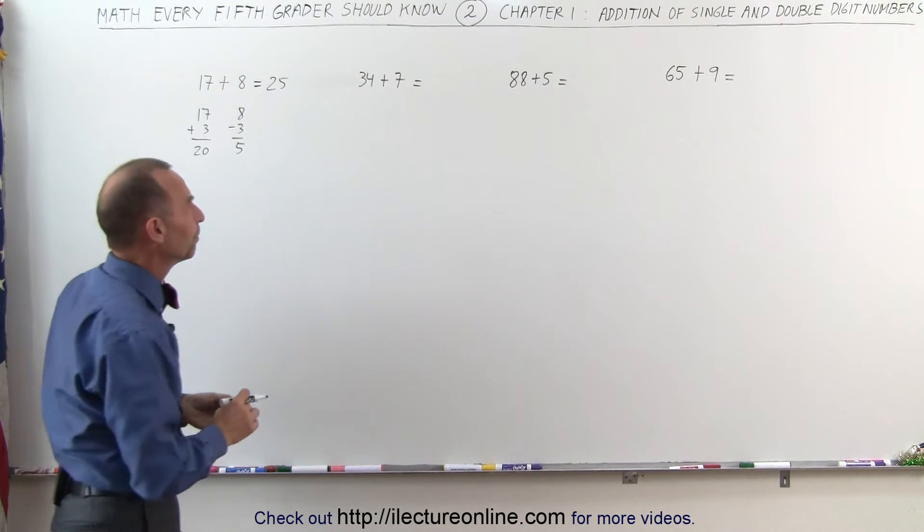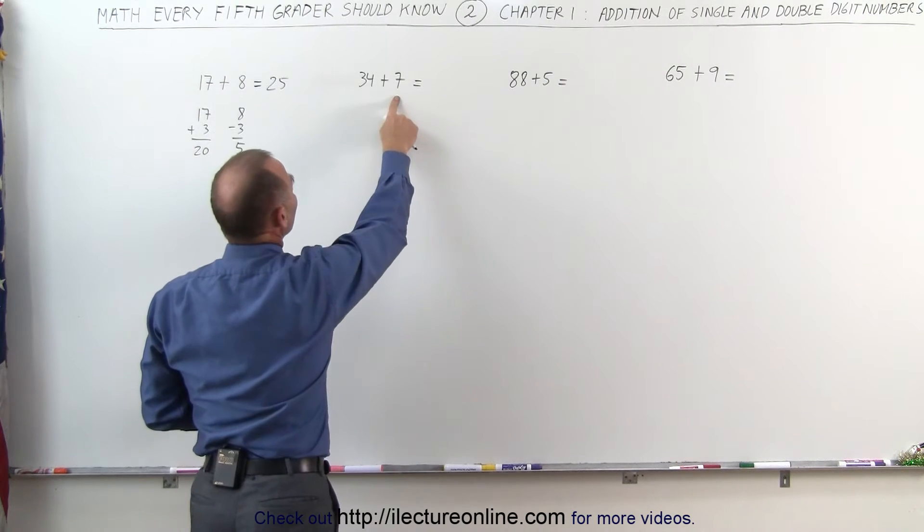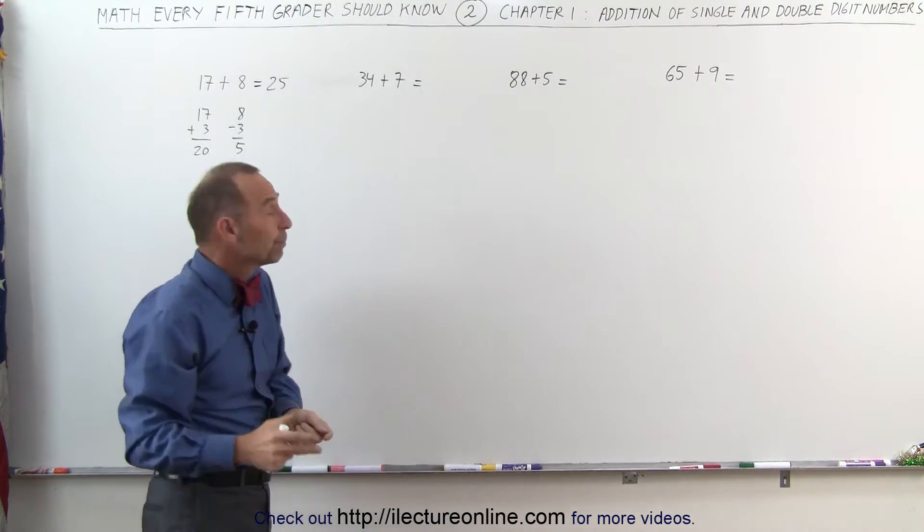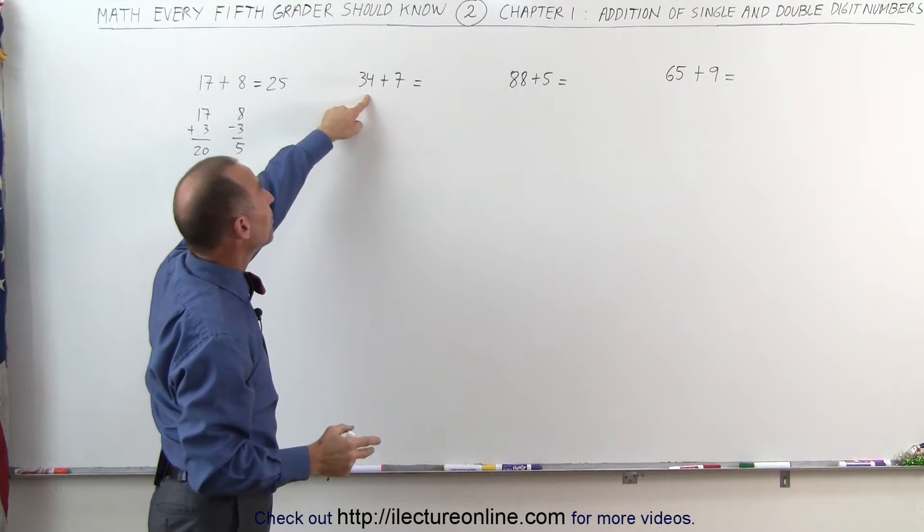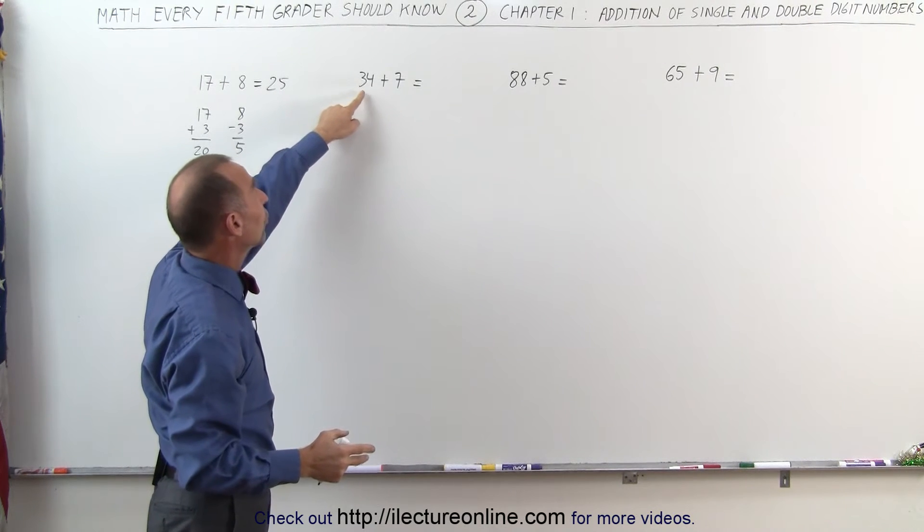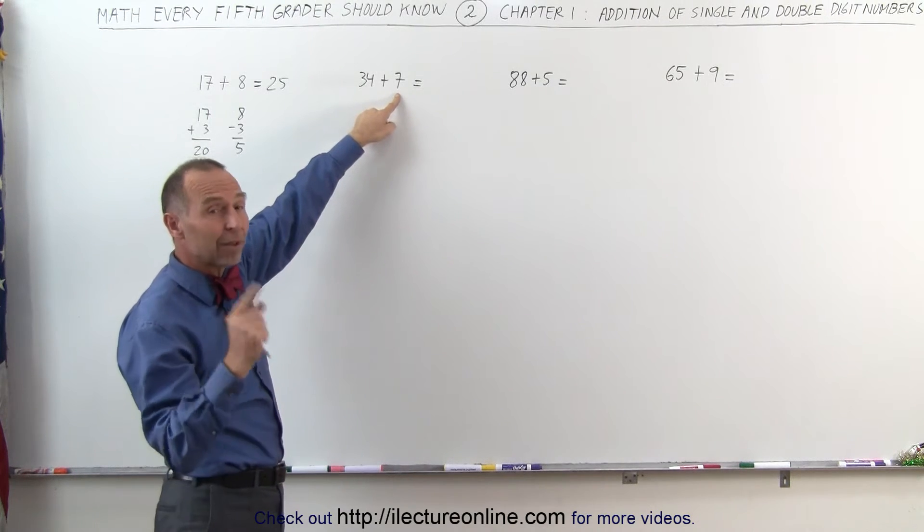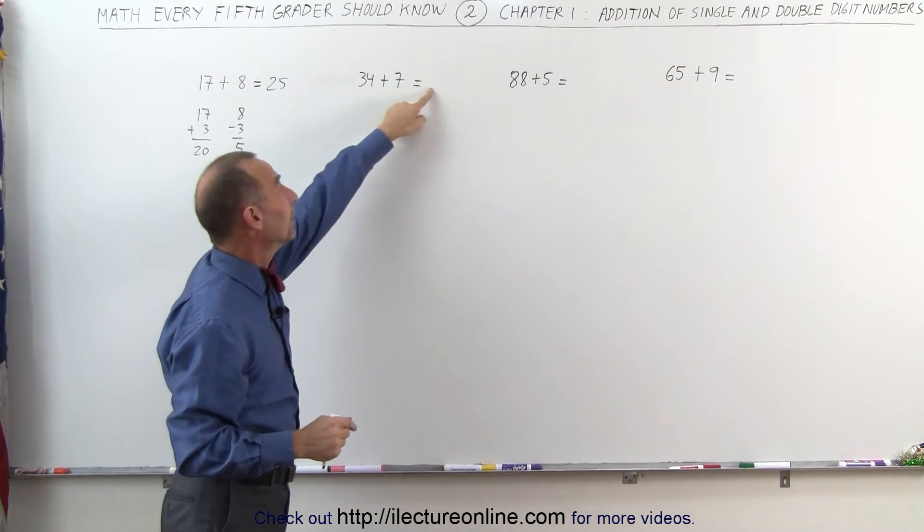Let's try the next number: 34 plus 7. How much more do I need to add to 34 to get 40? Well, 6 more will give me 40. 4 plus 6 is 10. So 34 plus 6 is 40. If I take 6 away from 7, I'm left with 1. 40 plus 1 is 41.